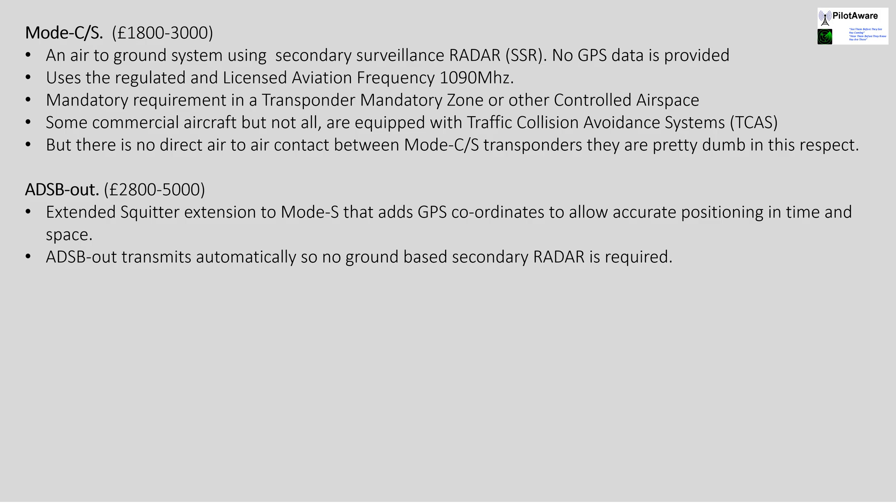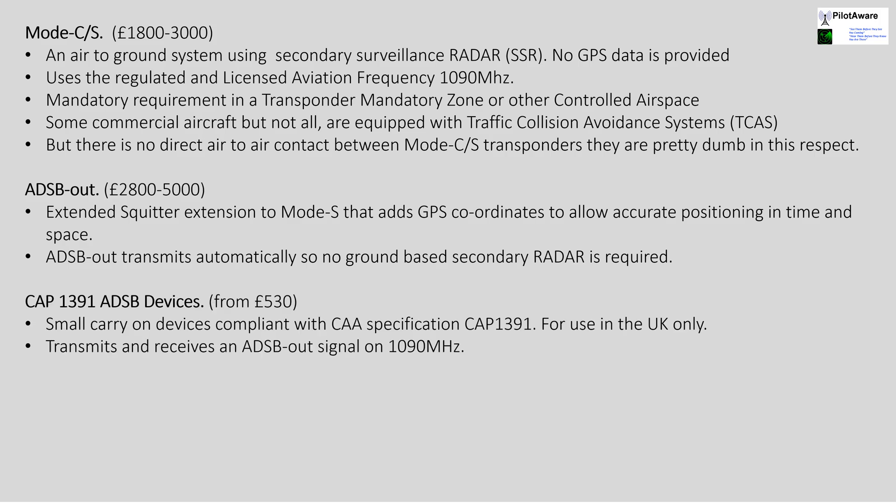A modern development of Mode S is the Automatic Dependent Surveillance Broadcast system, or ADS-B. ADS-B is automatic in that it doesn't require secondary surveillance radar to transmit, which it does every second or so. It also includes a GPS receiver so a more accurate position in time and space is transmitted. ADS-B also uses the aviation frequency so it can also contribute to frequency overload at 1090 megahertz. In 2016 the Civil Aviation Authority introduced the CAP 1391 specification for a low-cost, low-power ADS-B transceiver. The devices transmit and receive ADS-B in and ADS-B out and are approved for use only in the UK.